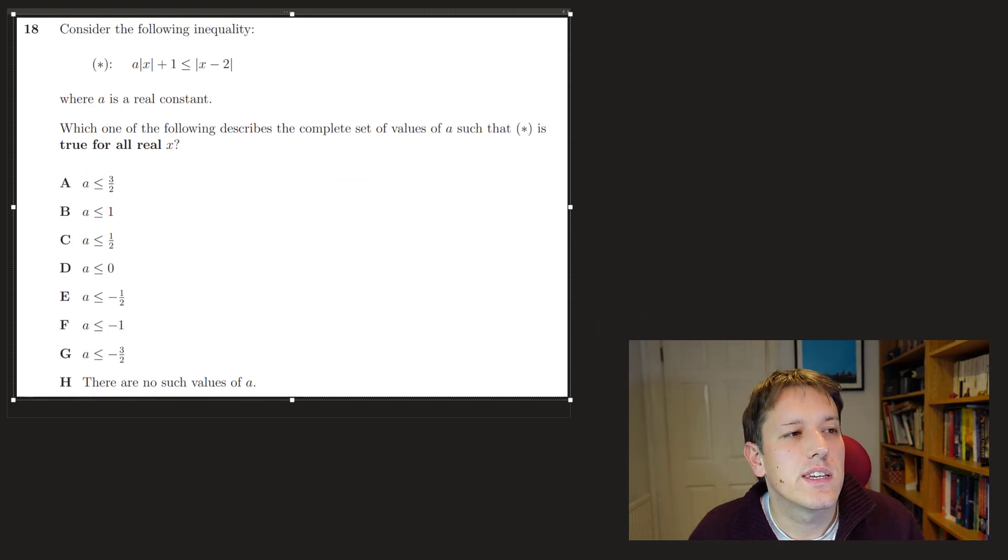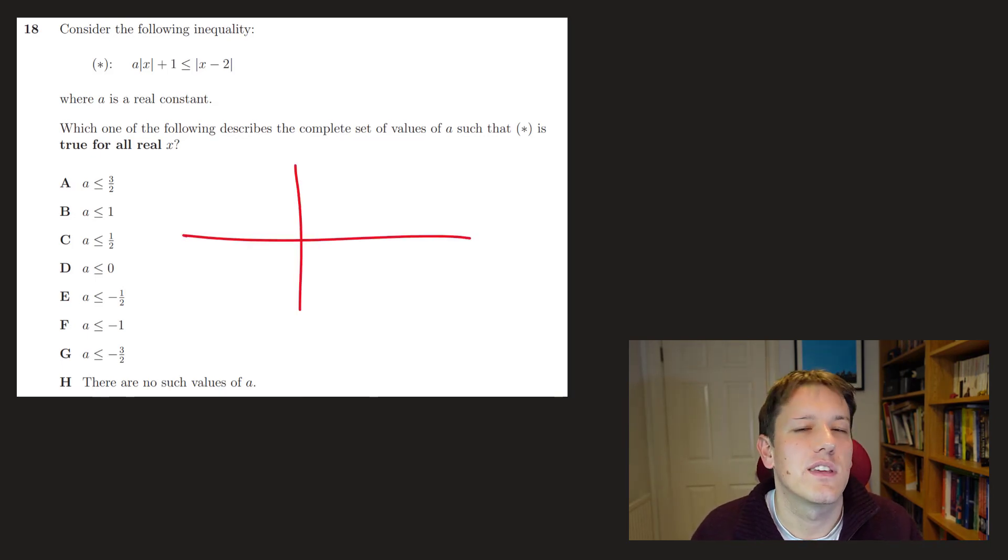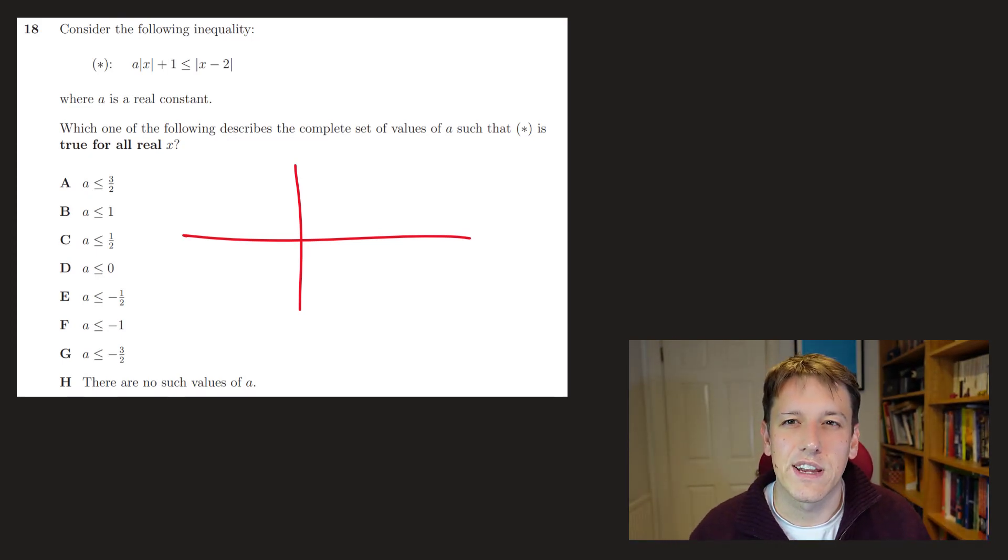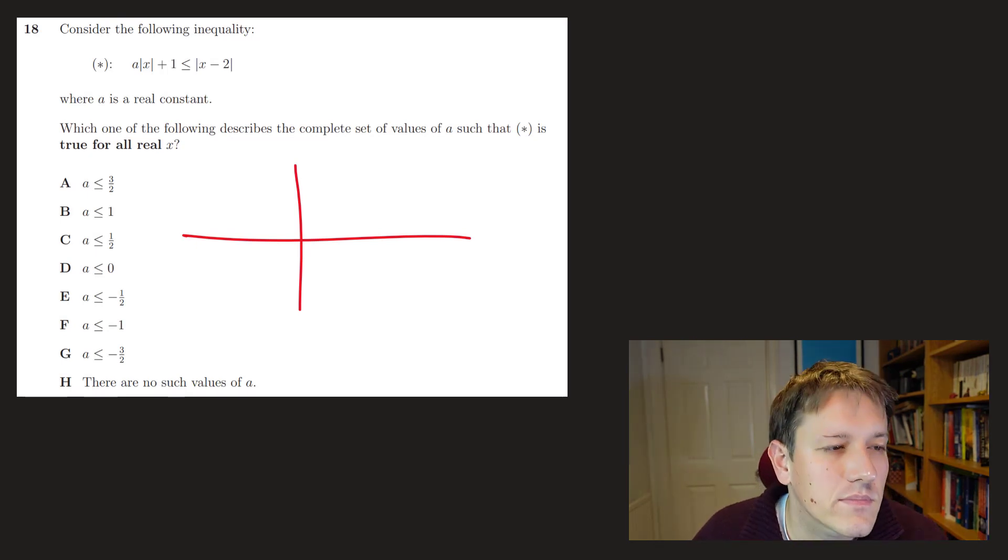Question 18, we've got to consider the following inequality a mod x plus 1 is less than or equal to mod x minus 2, and which of the following describes the complete set of values where this is true for all real x? So I think here I just want to sketch the graphs of the left-hand side and the right-hand side. Often the way these questions are written down, sometimes you might think about trying to manipulate them, and you could do this question in other ways as well, perhaps by squaring or something, but they're sometimes in these questions phrased in a way that they're meant to be attackable as they are. And we'll see that in one of the later questions here as well.